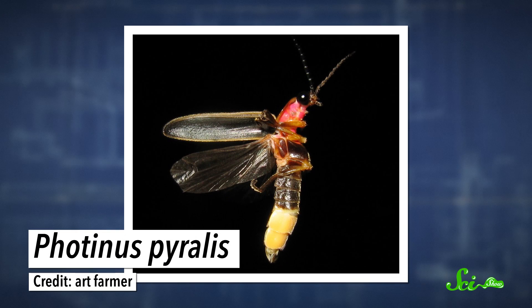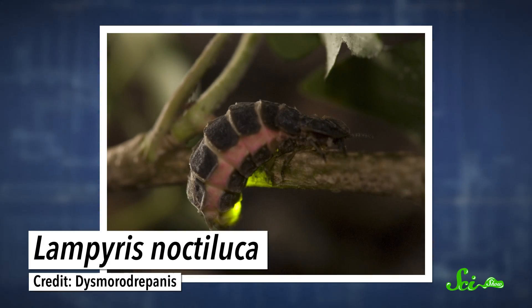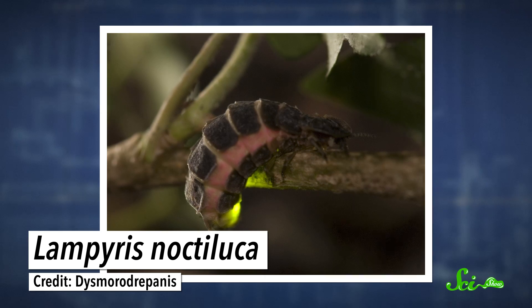Well, actually, the fireflies kind of are. Adult fireflies use their glowing bodies to find mates. And to make sure they find the right species, different kinds of fireflies use different patterns of flashes.